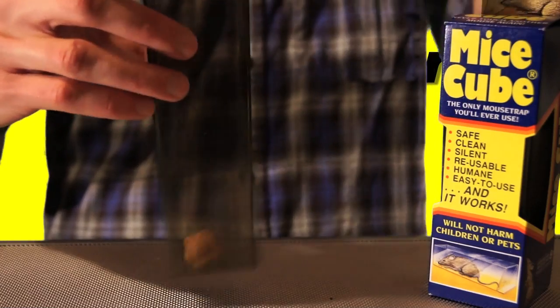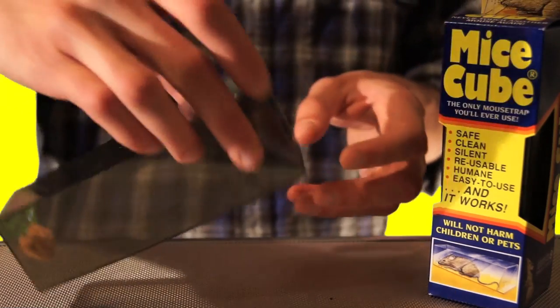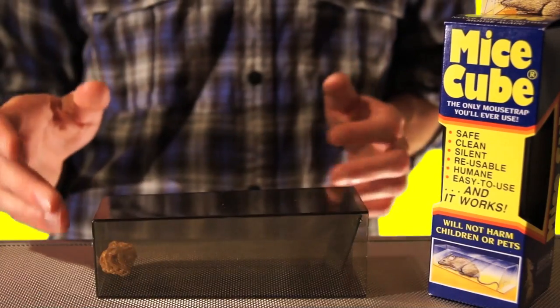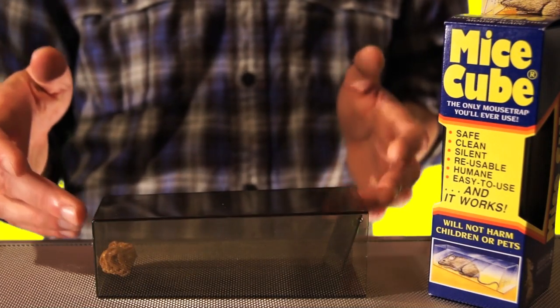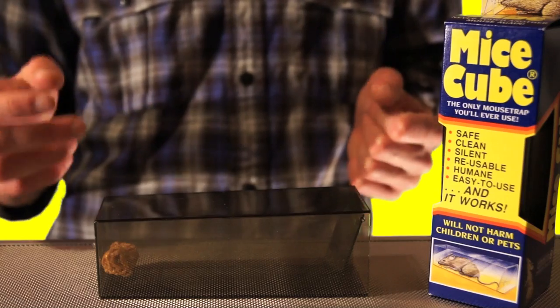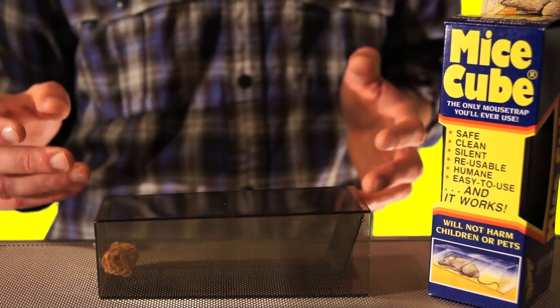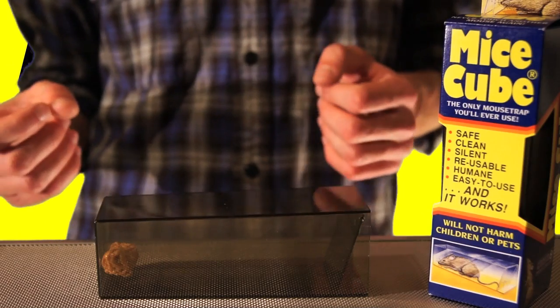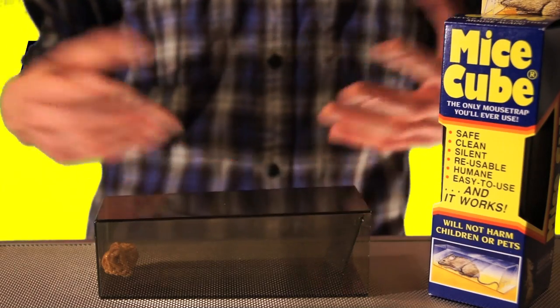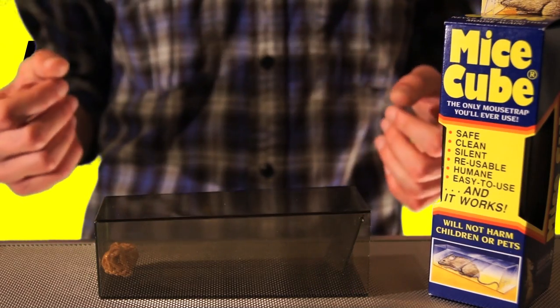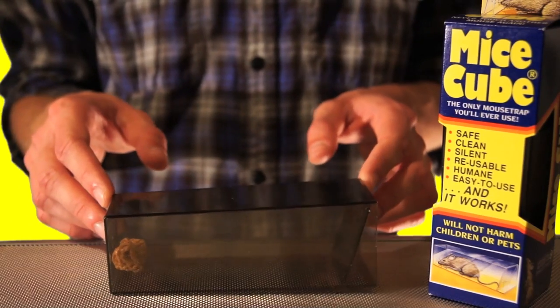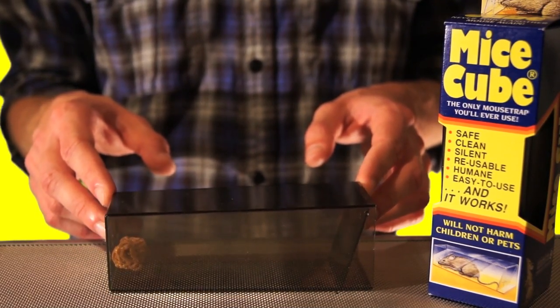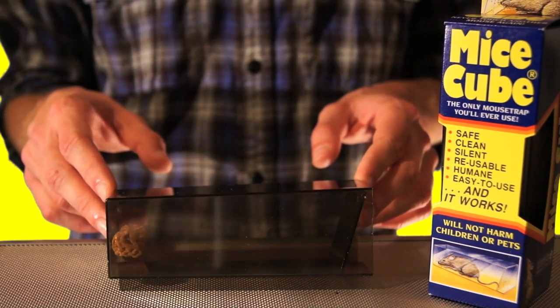One thing you do want to remember whenever you're using peanut butter, like they recommend putting peanut butter on the chip, is you don't want to use too much. Because mice, they're not like humans where if we choke on something or eat too much that's really sticky or viscous, we can just puke it back up. Mice can't puke. They don't have a gag reflex. So if you really care about not hurting the mice, then don't use too much peanut butter, unless you want them to experience death by peanut butter.